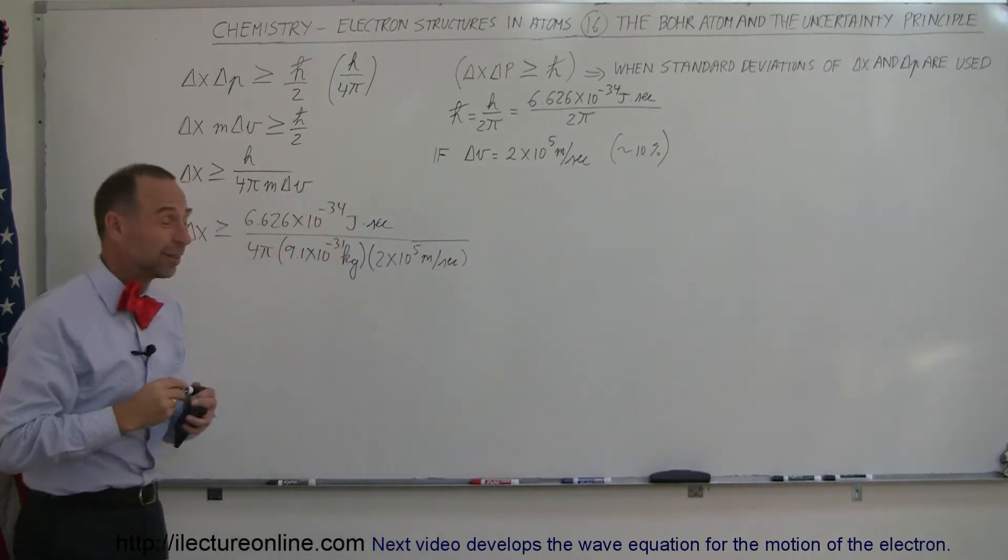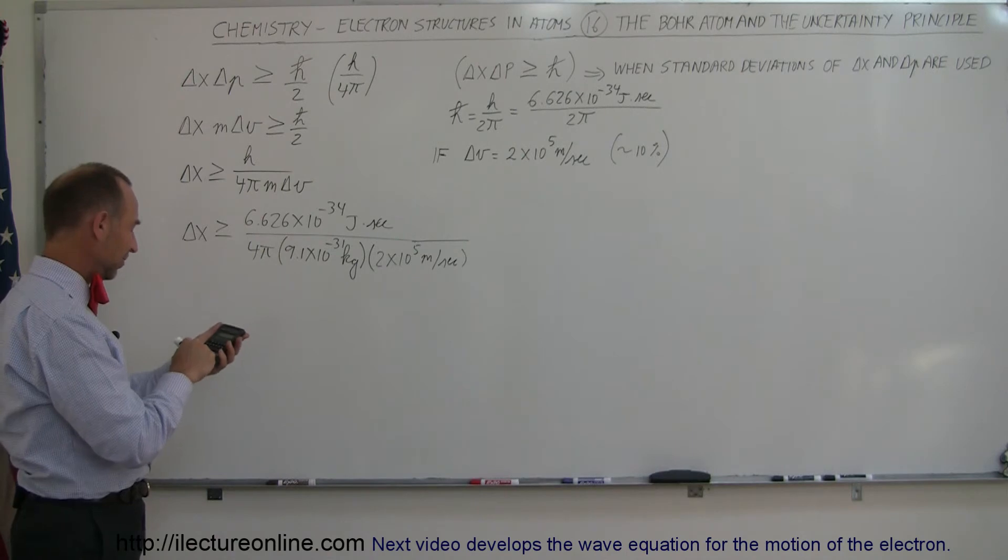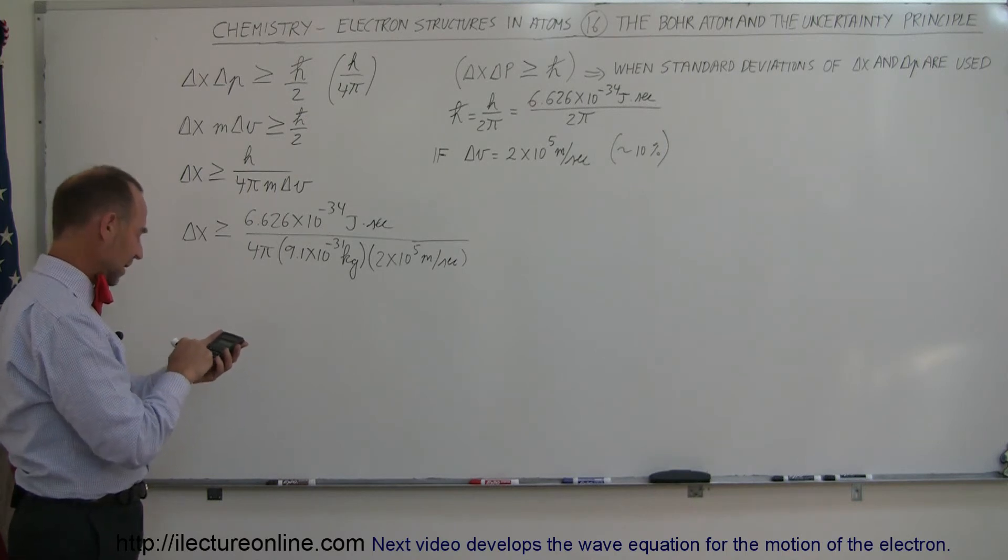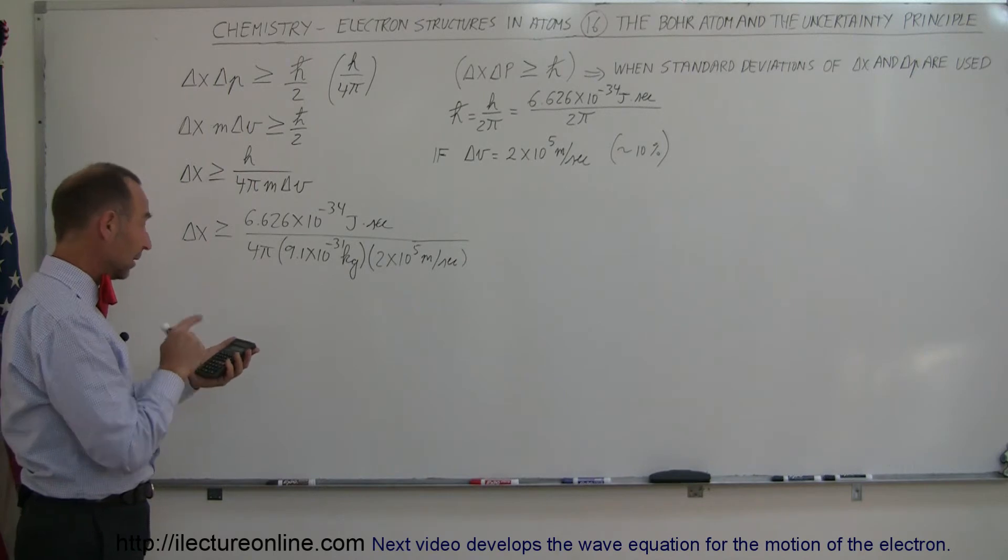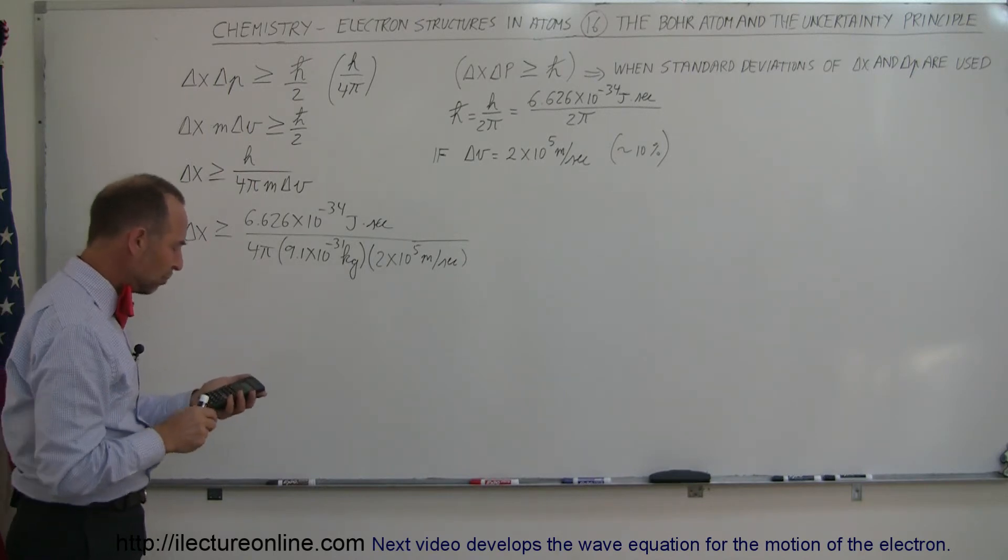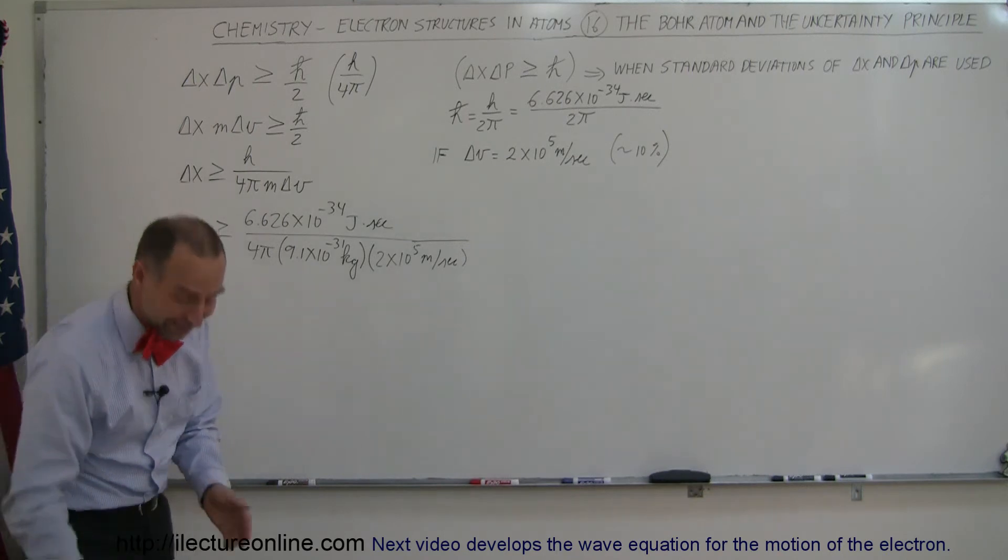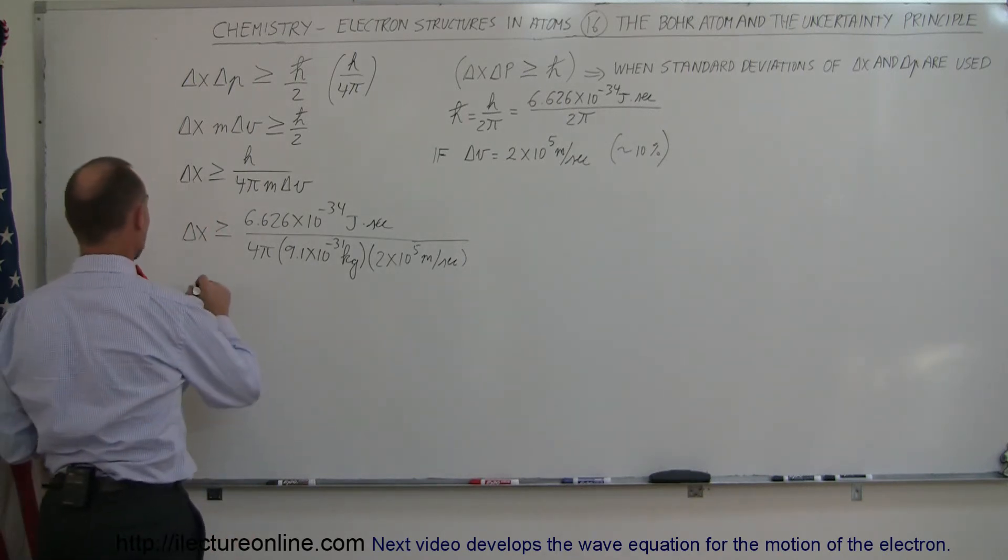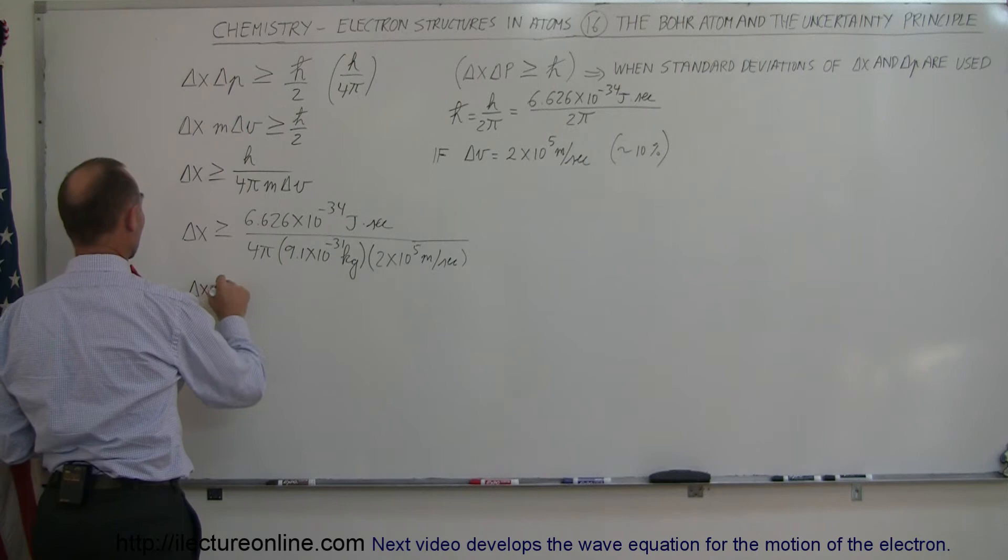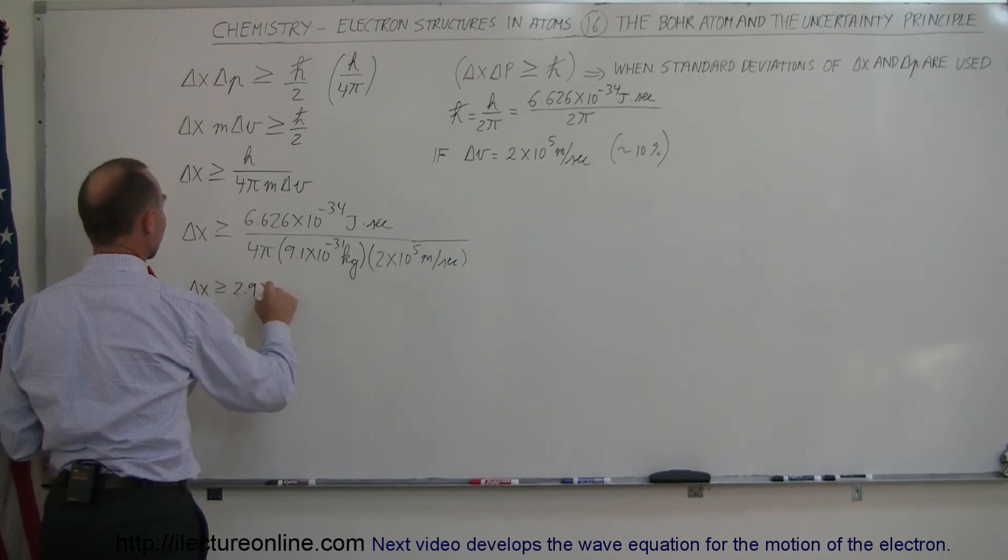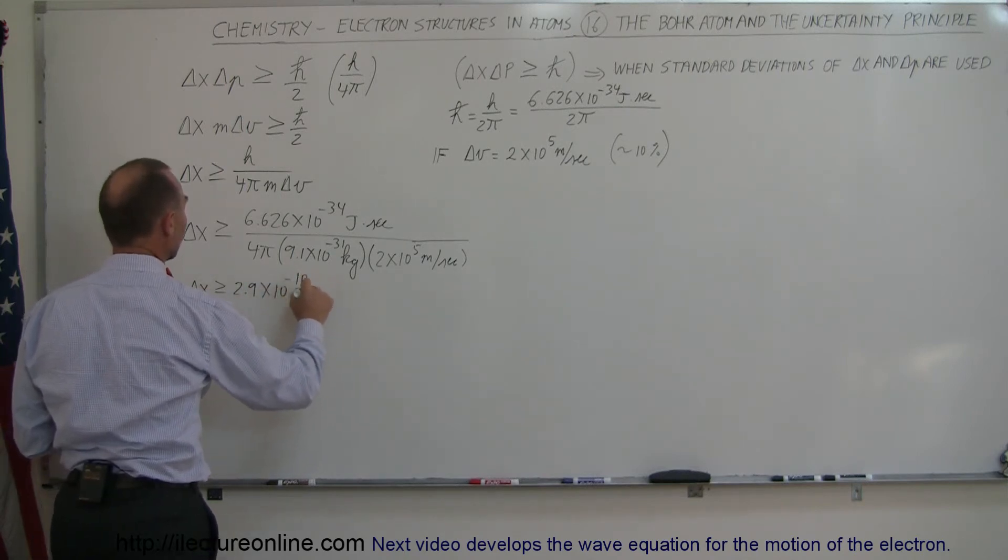All right, let's find out what that is equal to. 6.626e-34 divided by 4, divided by π, divided by 9.1e-31, that's the mass, and divided by the uncertainty, 2e5 equals, and we get 2.9 times 10 to the minus 10, and that would be meters. So Δx is greater than or equal to 2.9 times 10 to the minus 10 meters.